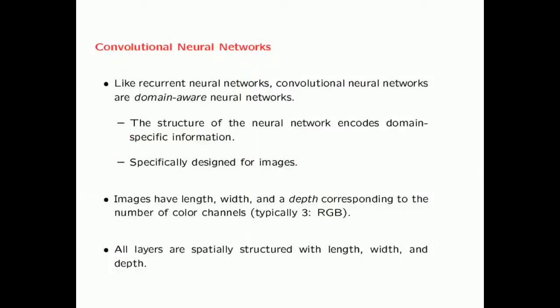Like recurrent neural networks, convolutional neural networks are domain-aware neural networks. What this means is that the structure of the neural network is designed for a very specific domain. In the case of recurrent neural networks, the structure is specifically designed for sequence data. In the case of the convolutional neural network, the structure is specifically designed for images.